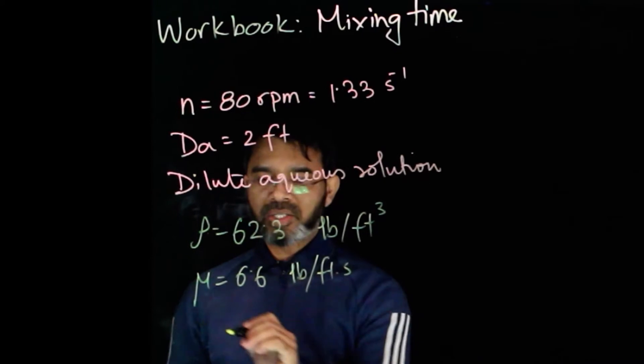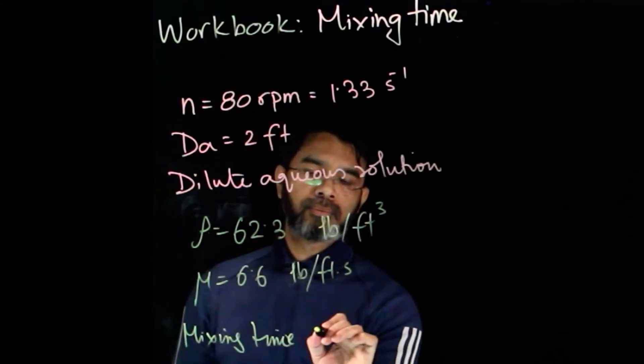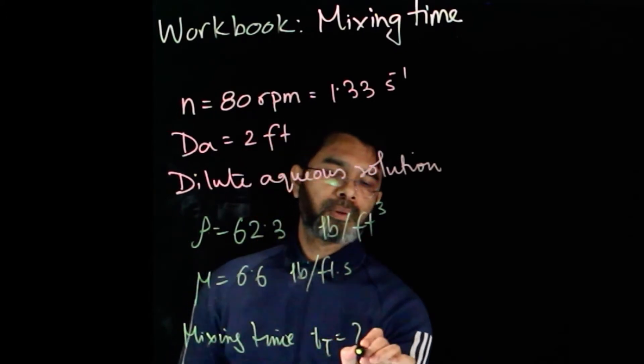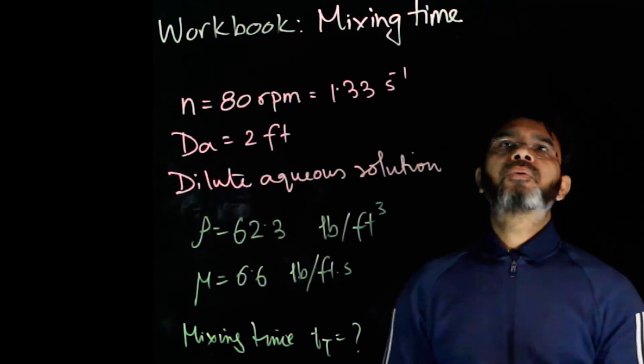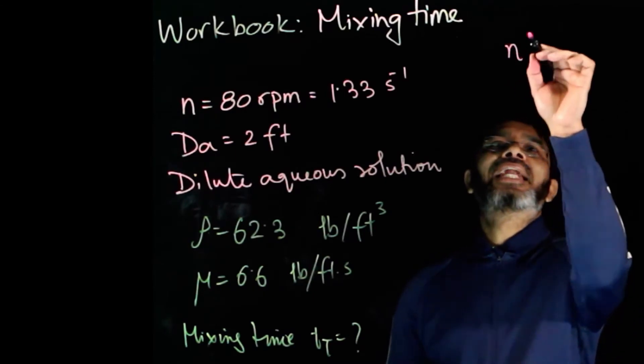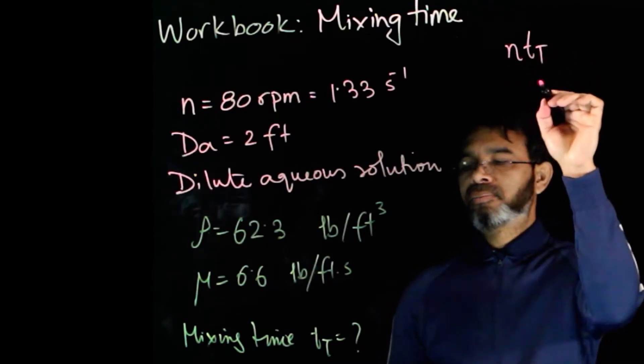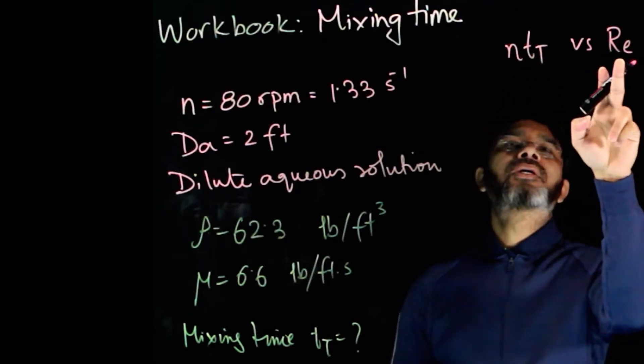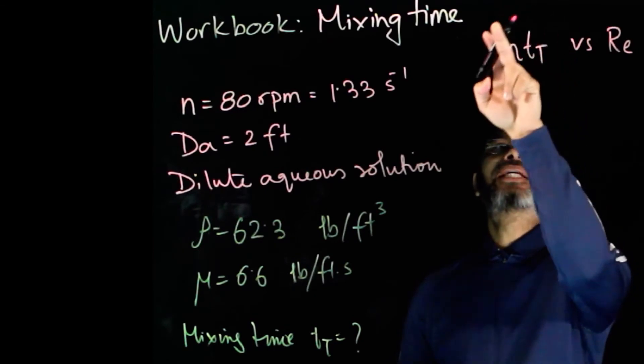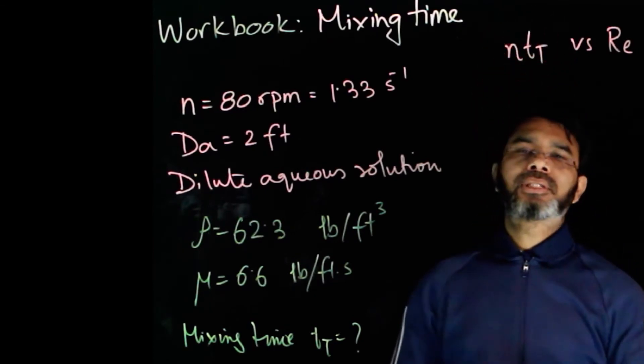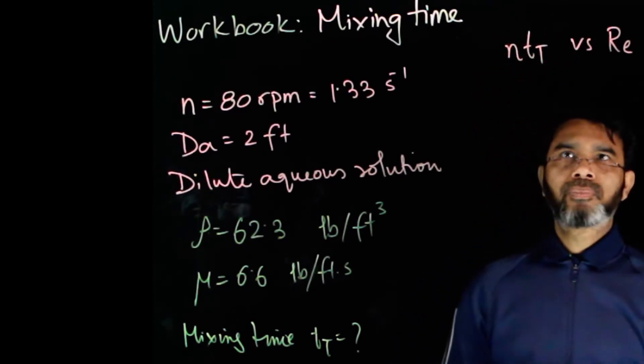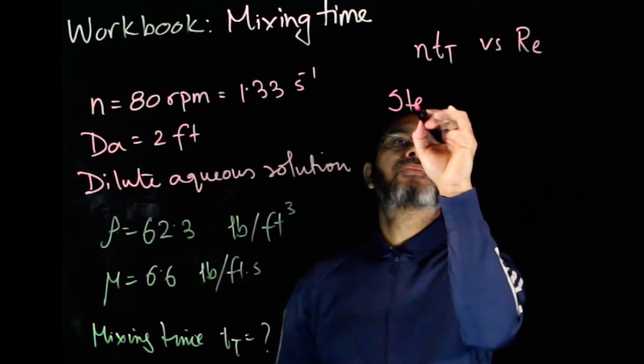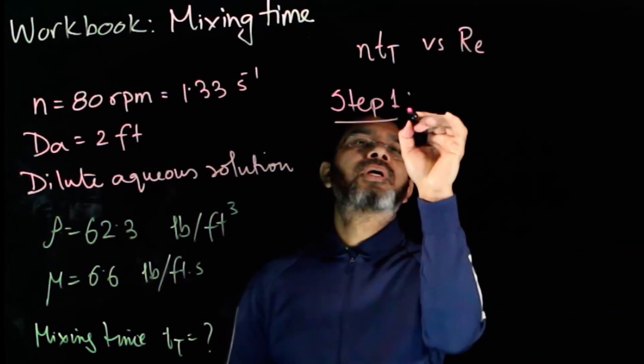For this problem, we know that we have a relation between nTt versus Reynolds number. If we know Reynolds number, we can find out the term nTt, and then we can find what is the mixing time. So step one is simply to calculate Reynolds number.